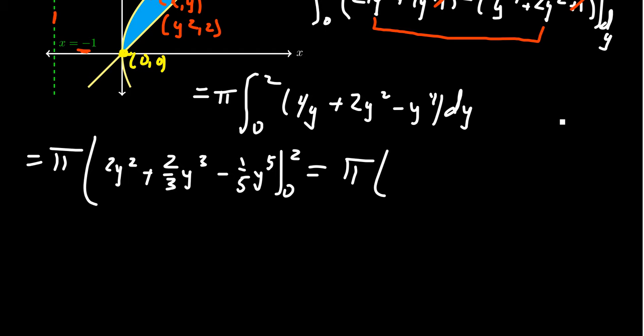So we plug 2 into the first one. 2 times y squared, that will give us an 8. Then for the next one, 2 cubed is 8 times 2 is 16, so we get 16 over 3. And then lastly, you plug in the 2 for the y to the 5th, you're going to get 32 over 5. There are some fractions to add and subtract there. 8 plus 16 thirds minus 32 fifths is 104 over 15. So the volume of this solid is 104 pi over 15. And that's our volume right there. How excellent.